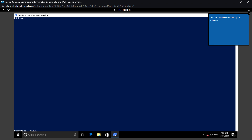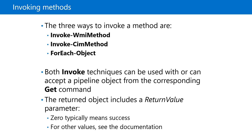Next, we'll look at invoking methods using the CIM command. The Invoke-CimMethod command is similar to Invoke-WmiMethod, however because it is a CIM command it communicates using a different protocol. When connecting to the local repository it uses the DCOM protocol, and when connecting to a remote computer using CIM it uses the WS-Man protocol. When using an established CIM session, it uses either DCOM or WS-Man depending on how the session was created.